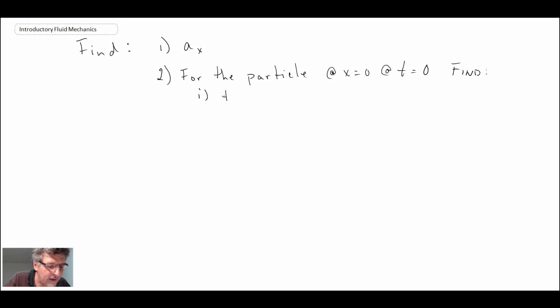Considering a particle of fluid at x equals 0 and t equals 0, find the following. The first is the position of the particle. This is the Lagrangian formulation because it's following the particle.